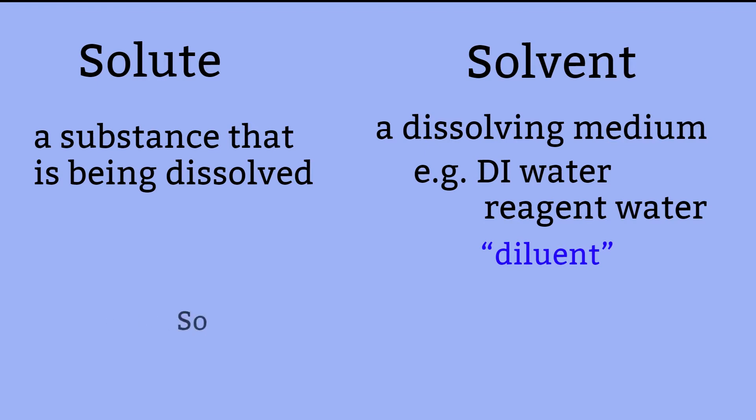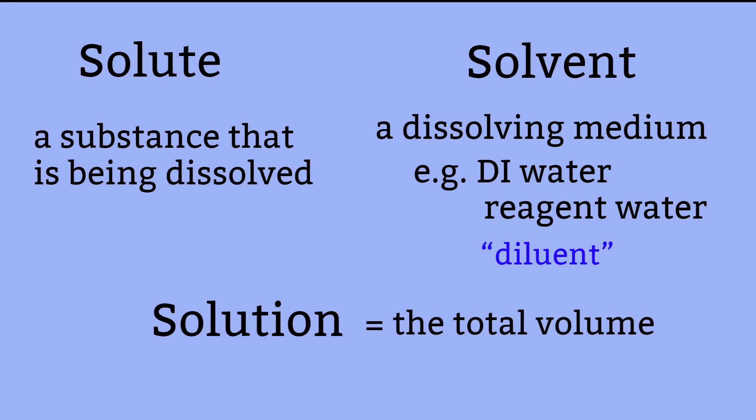A diluent is a substance that is used to dilute or dissolve the solute. Solution is the total volume — this is the bottom number when you write the dilution as a fraction. A common mistake I've seen people make is using the bottom number as the amount of solvent needed. That is incorrect. The bottom number is the total volume. Remember that.